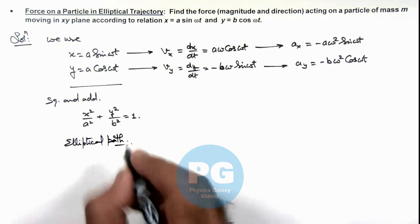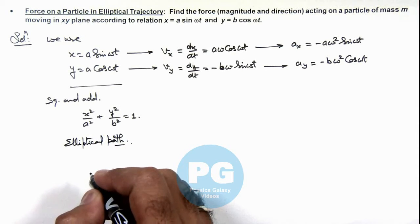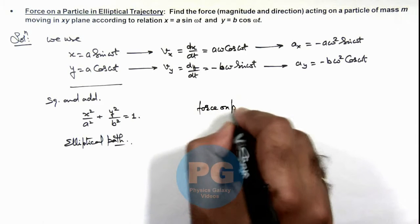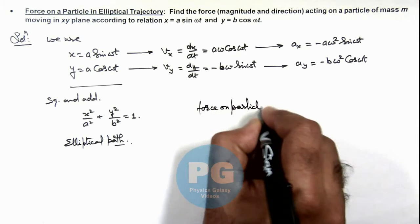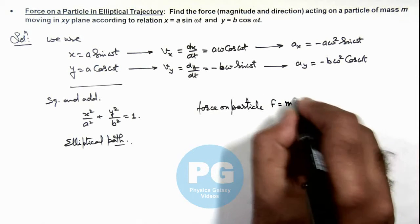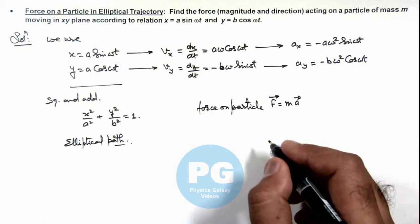In which the particle is moving. And if we calculate the force on particle, then force on particle can be given as m a vector, that is a total force in magnitude and direction.